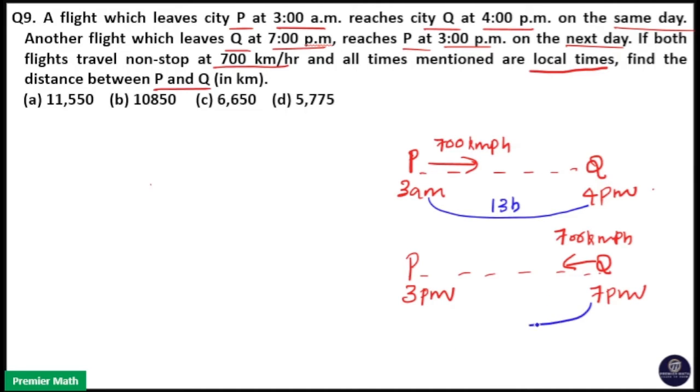Here, you can see 7 p.m. to 3 p.m. Here, 7 p.m. to 7 p.m. is 24 hours. 3 plus 4 is equal to 7. So, 24 minus 4 is equal to 20 hours is the time duration of Q to P flight.